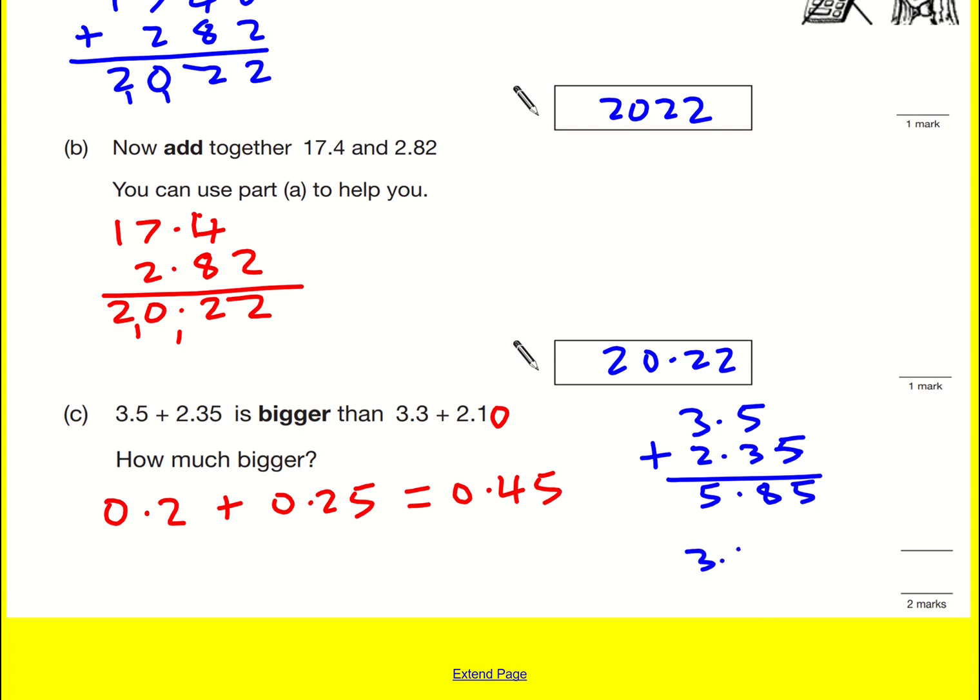And then similar for 3.3 and 2.1, this one's a little bit simpler. That will give us 5.4. And then you might be able to see the difference is going to be 0.45, or if not, let's put a zero on it to show you place value a bit more clearly. Now we can see that it's going to be 0.45.